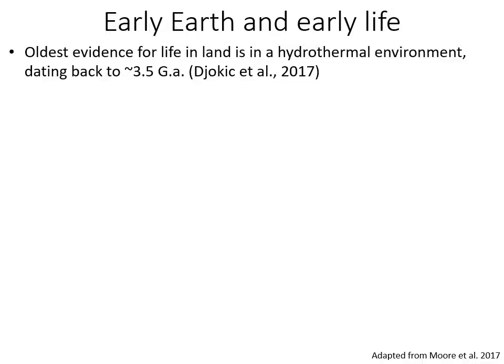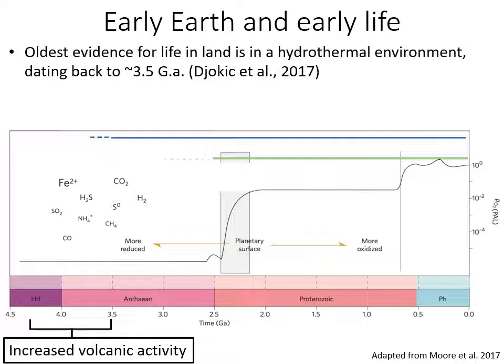To talk about that we need to first visit early earth and early life metabolic pathways. We have evidence for life in a hydrothermal environment dating back to 3.5 billion years ago. I'm bringing a timeline of earth history with time in billions of years on the y-axis and oxygen concentrations on the x-axis. I've highlighted the period of early earth when we think increased volcanic activity was happening, and that is important because volcanoes are producing chemical forms of energy that microbes can use for their metabolic pathways.